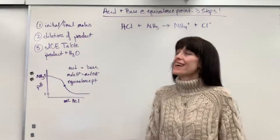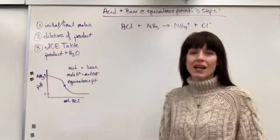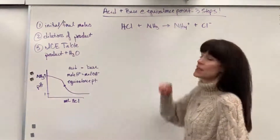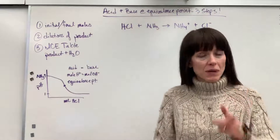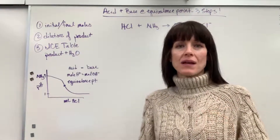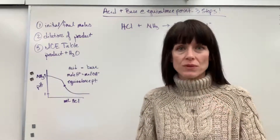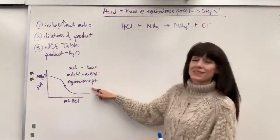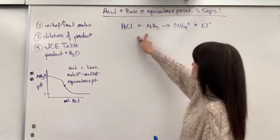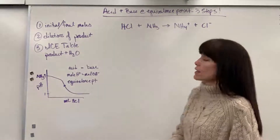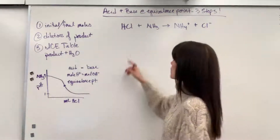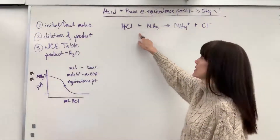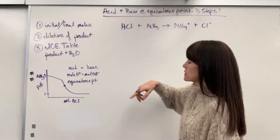I'm excited to teach this to you. This is determining the pH of a resulting solution when you have an acid and a base react, but this is special. The acid and base have equal number of moles that react. This is really, really special when we look at a graph. In this example, I'm going to start with ammonia NH3 and then we're going to add hydrochloric acid to it. Notice this is a weak base adding to a strong acid.